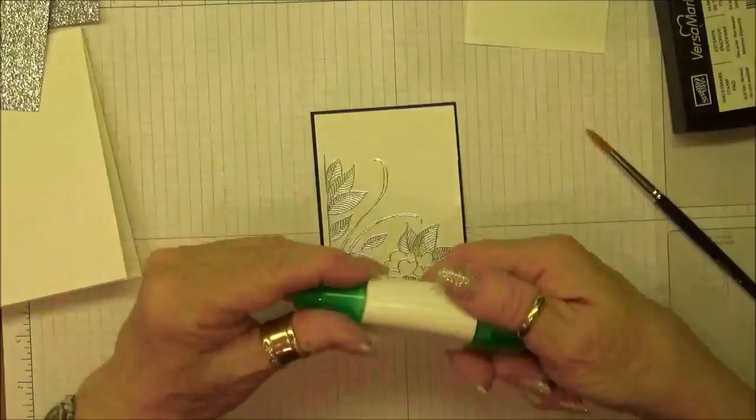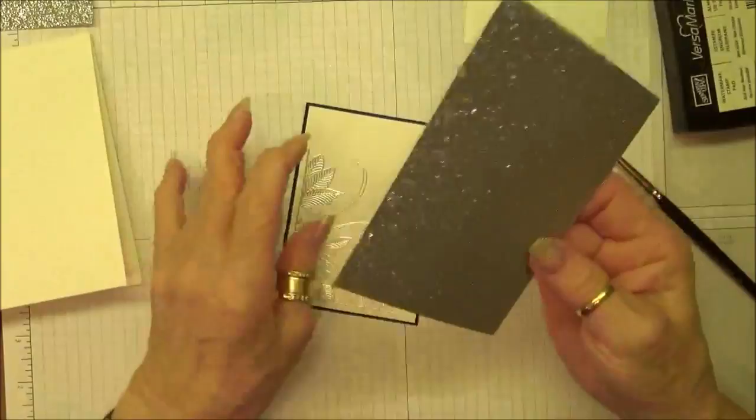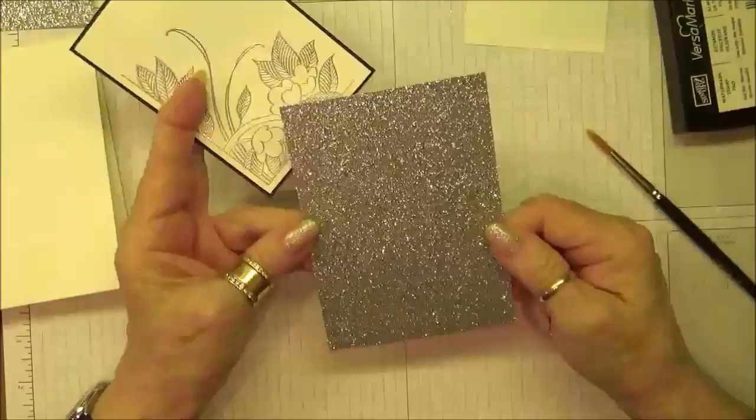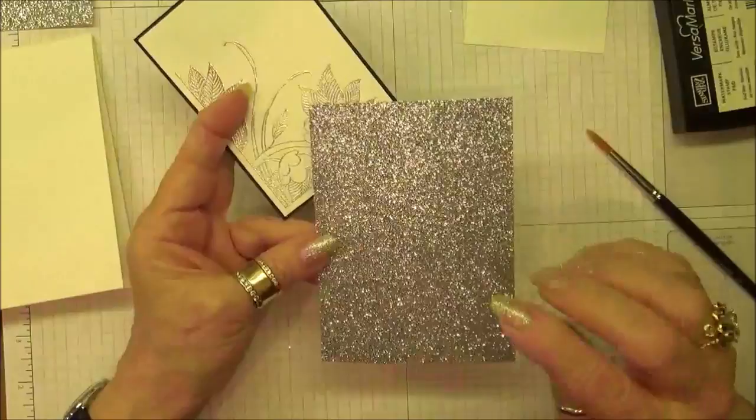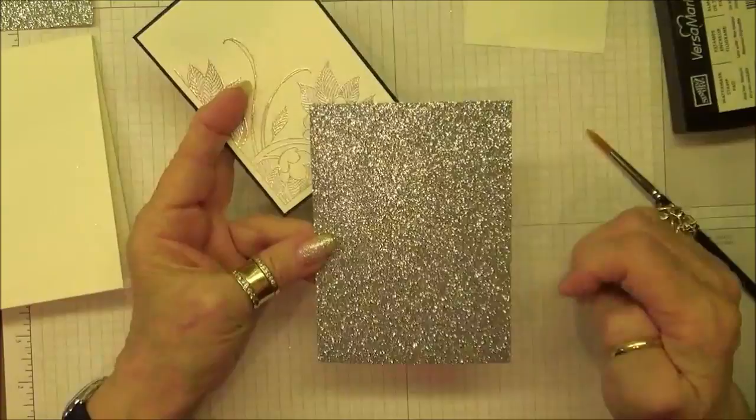So if you don't lay it down perfectly the first time and get it exactly where you want it, because the Tombow glue remains wet, you have some slip time, which I find really important. The other neat thing about this new glimmer paper is that it's easier to glue down. The glitter, because of the fact that it doesn't fall off, is a much finer glitter.